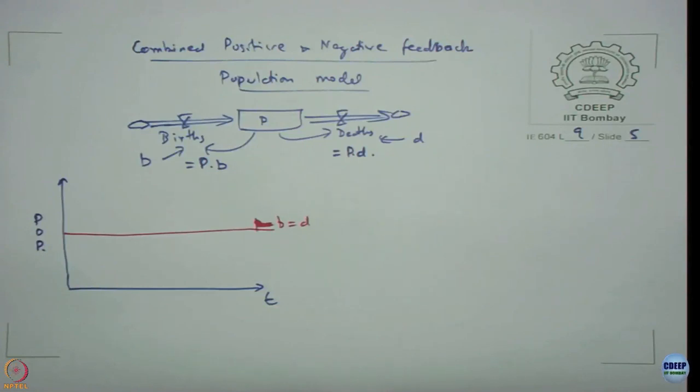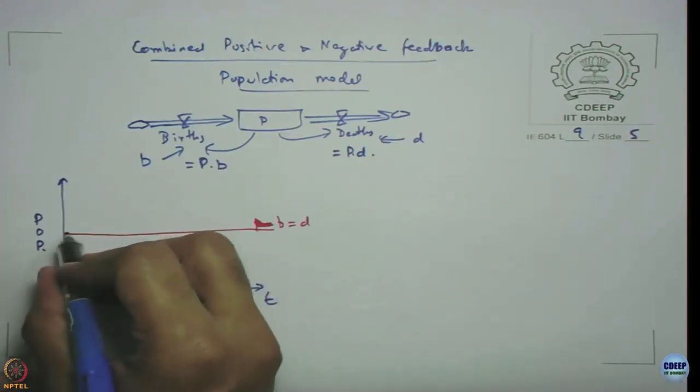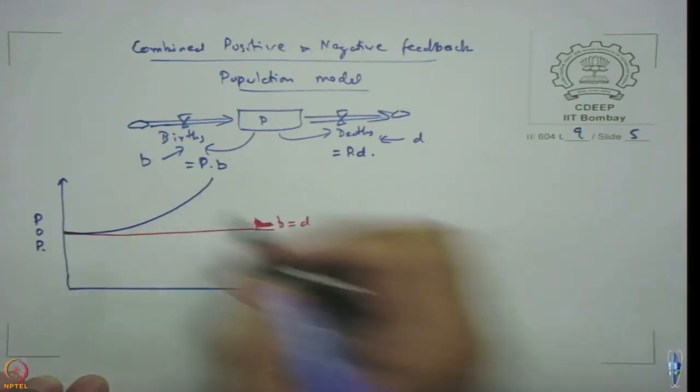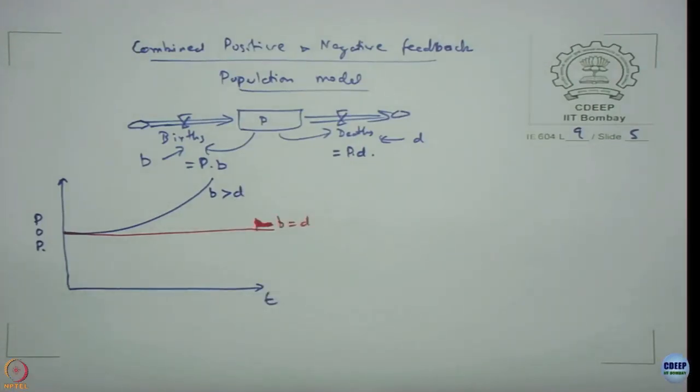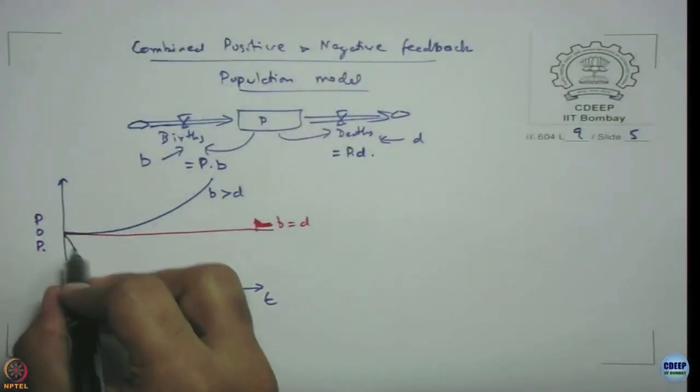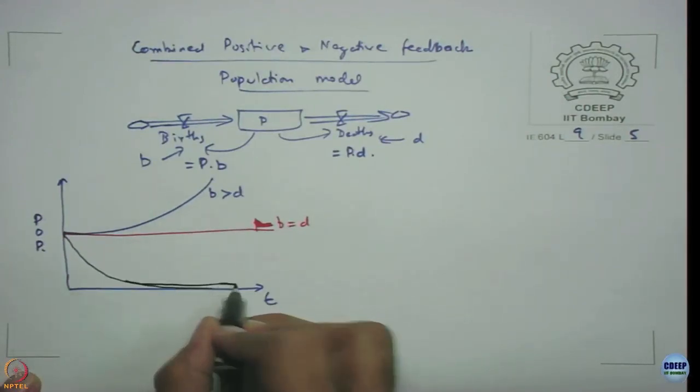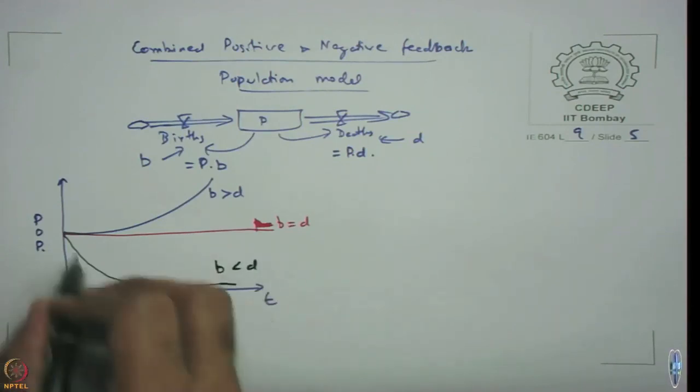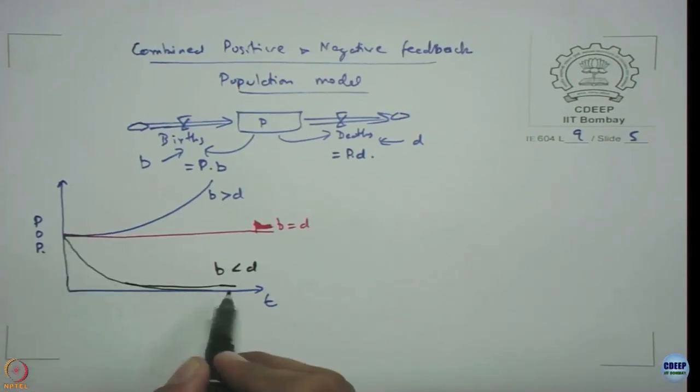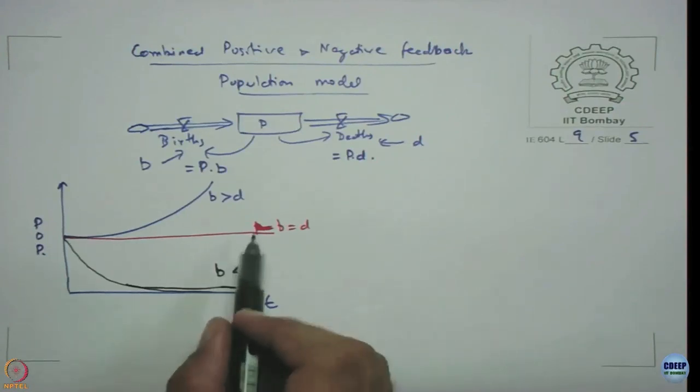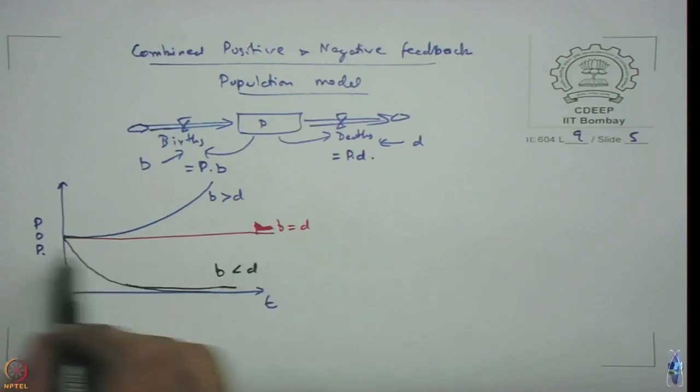Now if you have more births than deaths, what will happen? It will be an exponentially increasing system when B is greater than D. If B is less than D, less births than deaths, then what will happen? It will decay with a zero value goal. This is when B is less than D. This is your goal seeking behavior, zero value goal. This is the shape we drew. That is what you will get when deaths are more than births. The population is going to keep declining until it hits zero. If births are greater than deaths, it is going to have exponential growth. If births are equal to deaths, then you are going to get a constant rate.